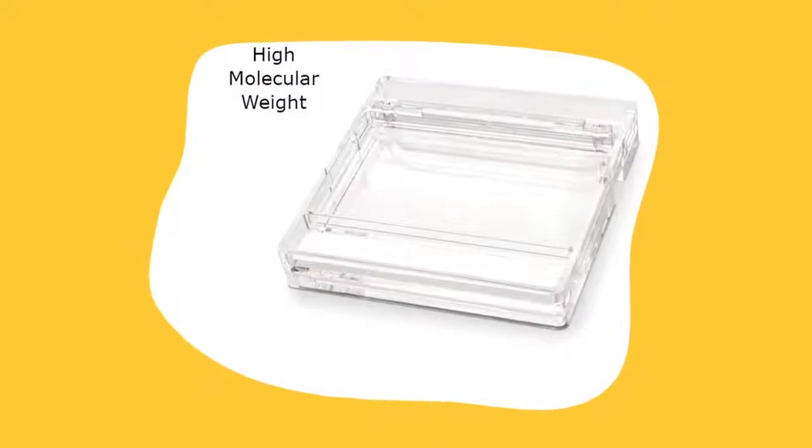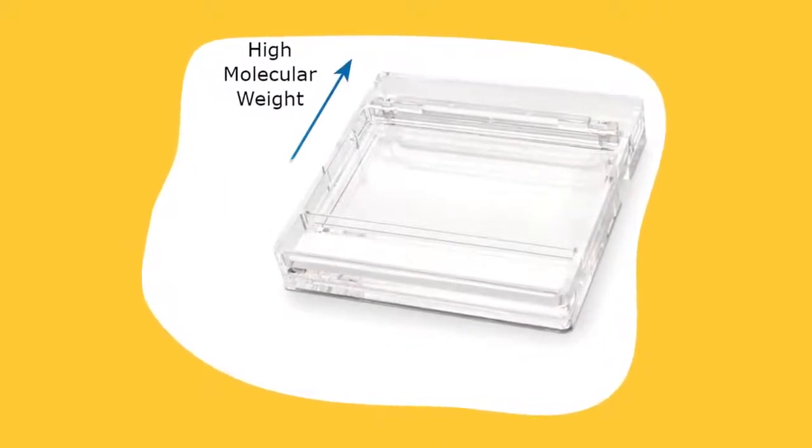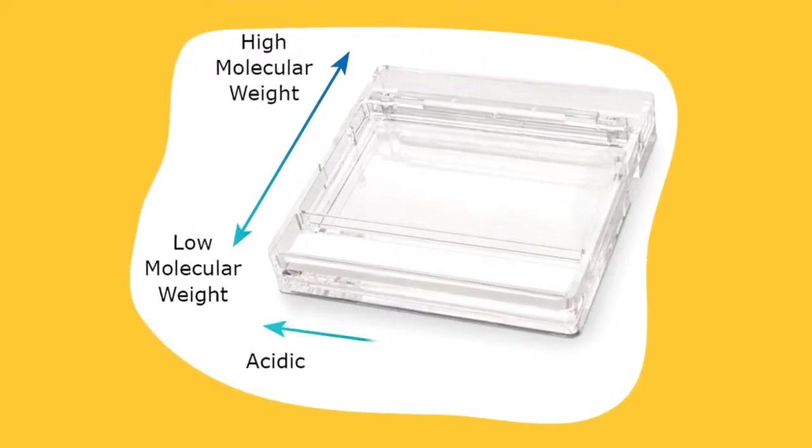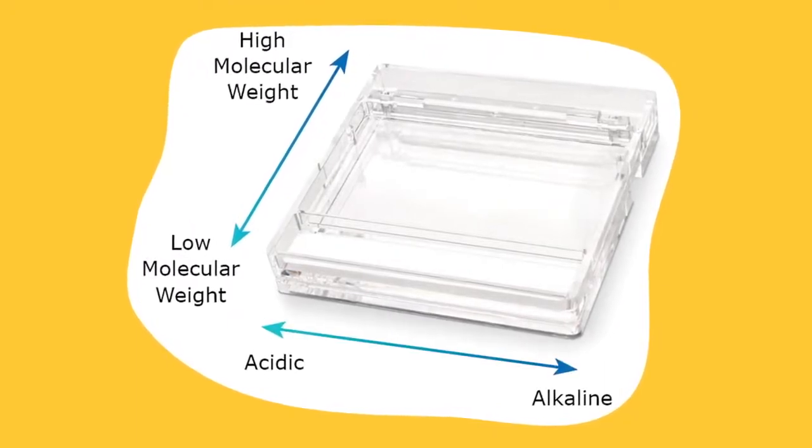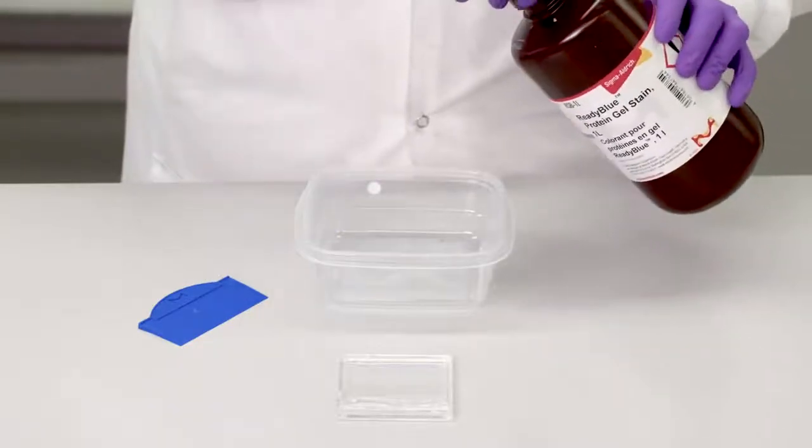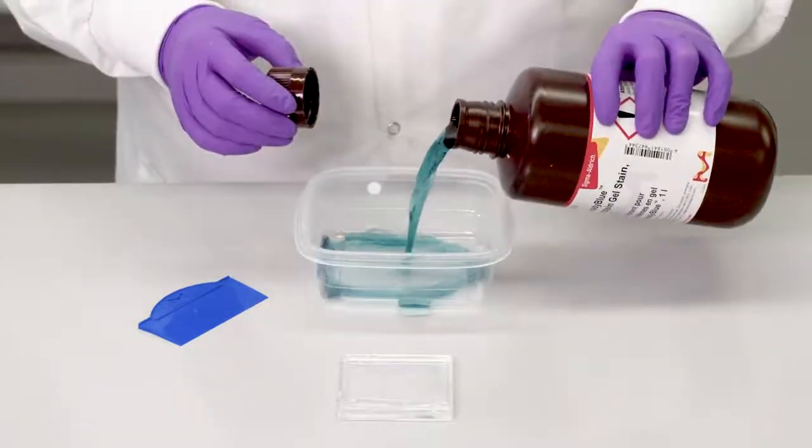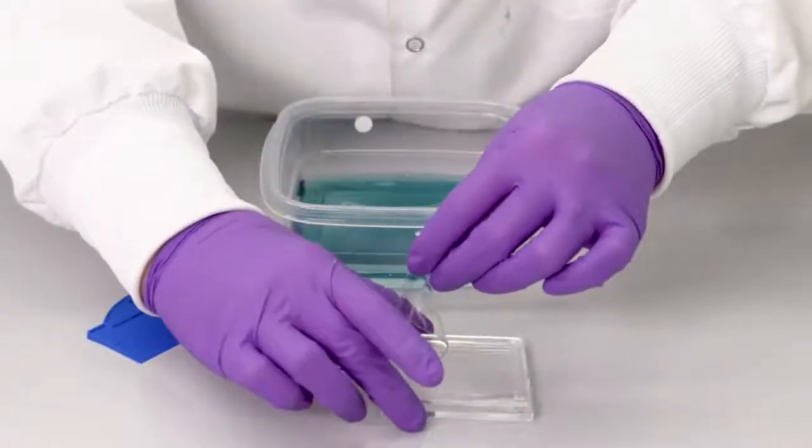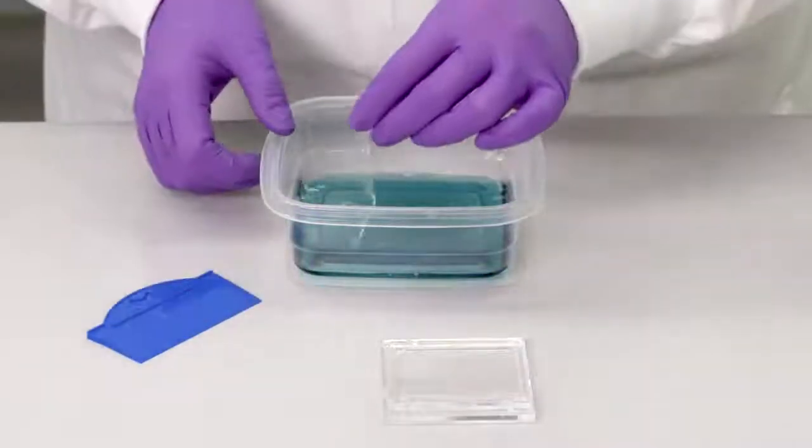Proteins are separated from high molecular weight to low molecular weight along the x-axis and acidic to basic along the y-axis. Finally, remove the gel from the cassette and proceed to staining or western blotting.